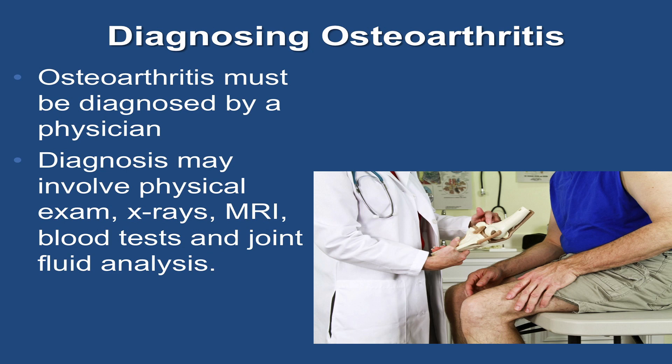It is not possible for osteoarthritis to be diagnosed by genetic testing. Osteoarthritis is diagnosed based on an examination of the affected joint by a doctor, usually after a patient has been experiencing symptoms of pain and joint stiffness. A doctor will also check your reflexes and muscle strength, and will assess your ability to walk, bend, and perform everyday tasks. Diagnosis of osteoarthritis may also involve x-rays, MRI, blood tests, and joint fluid analysis.